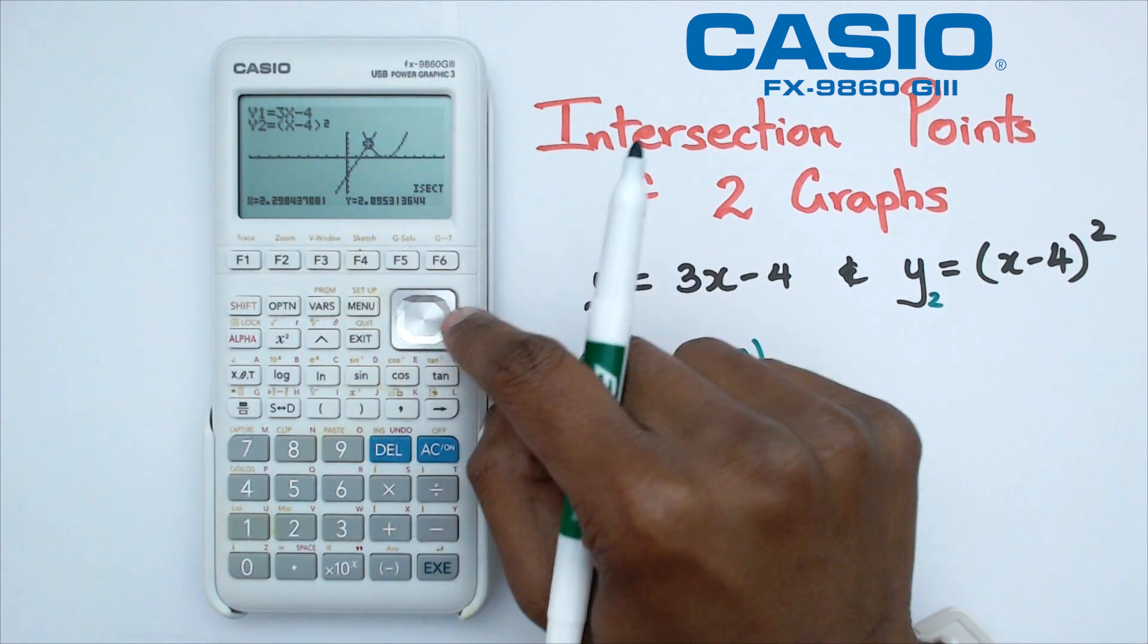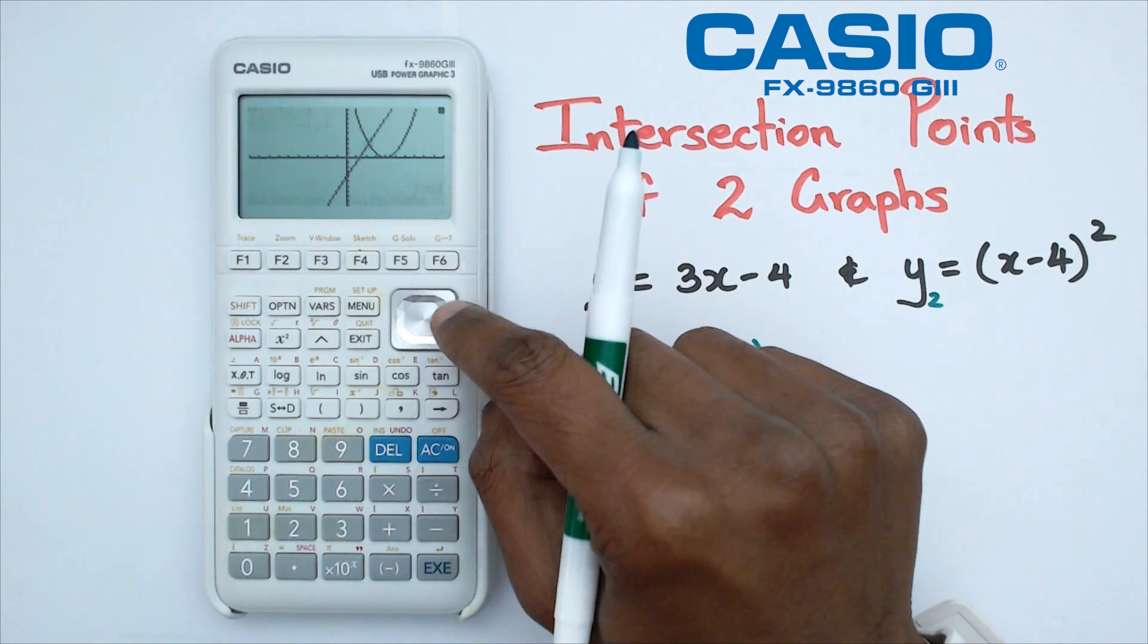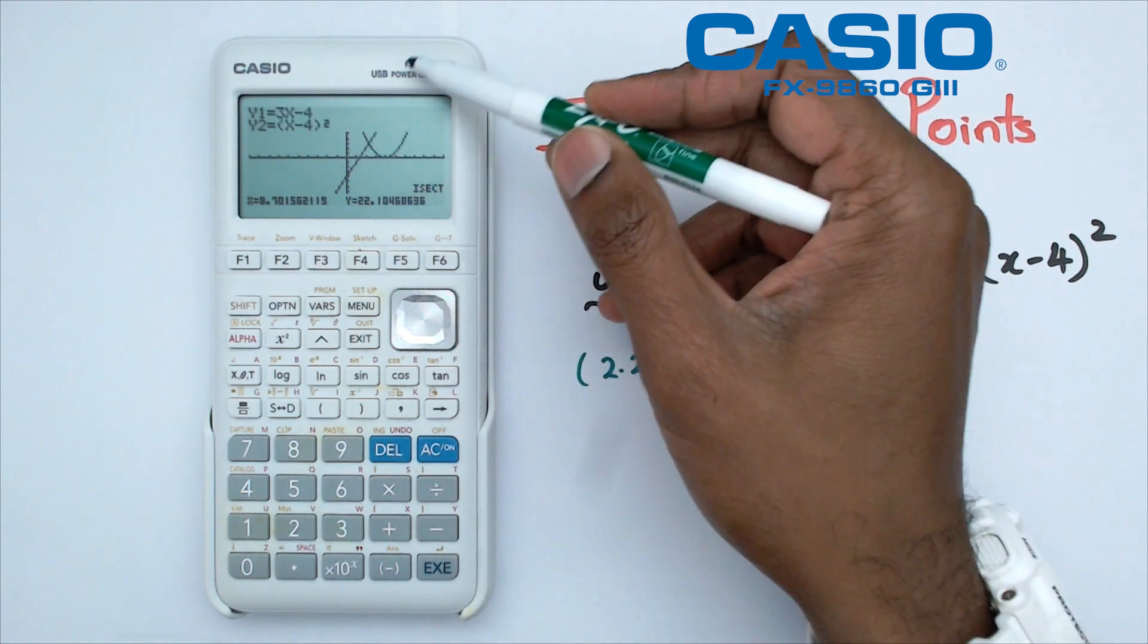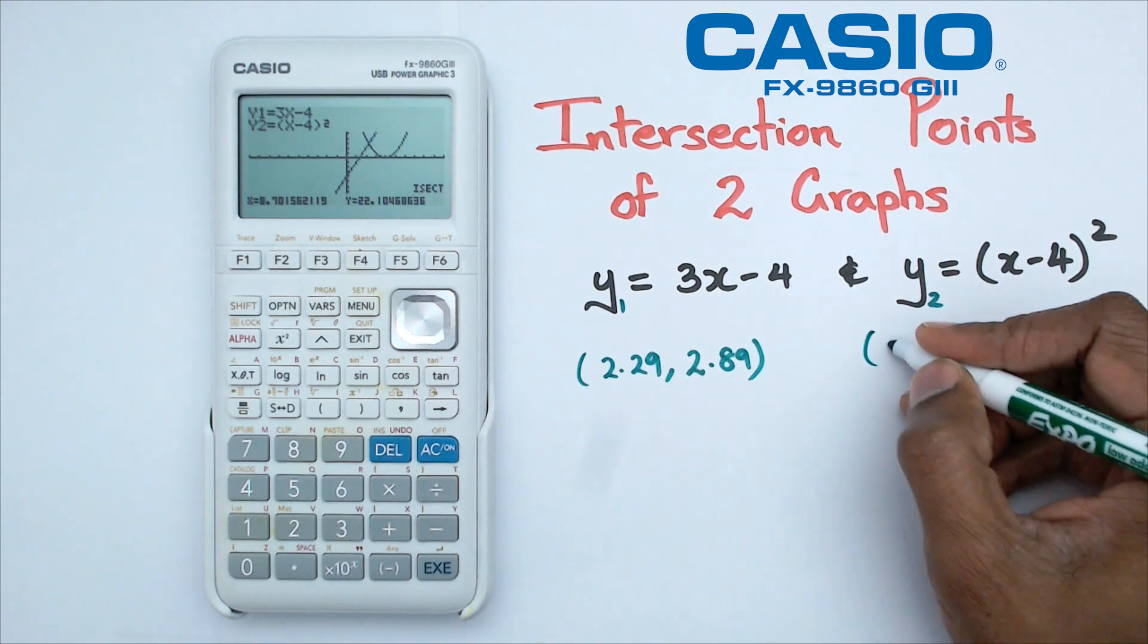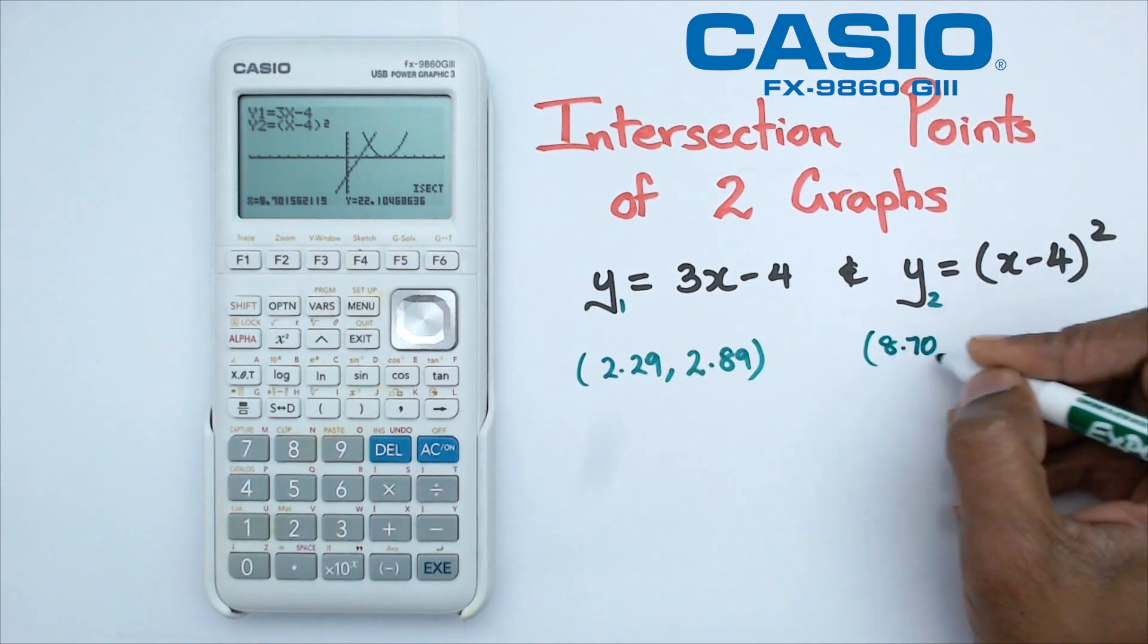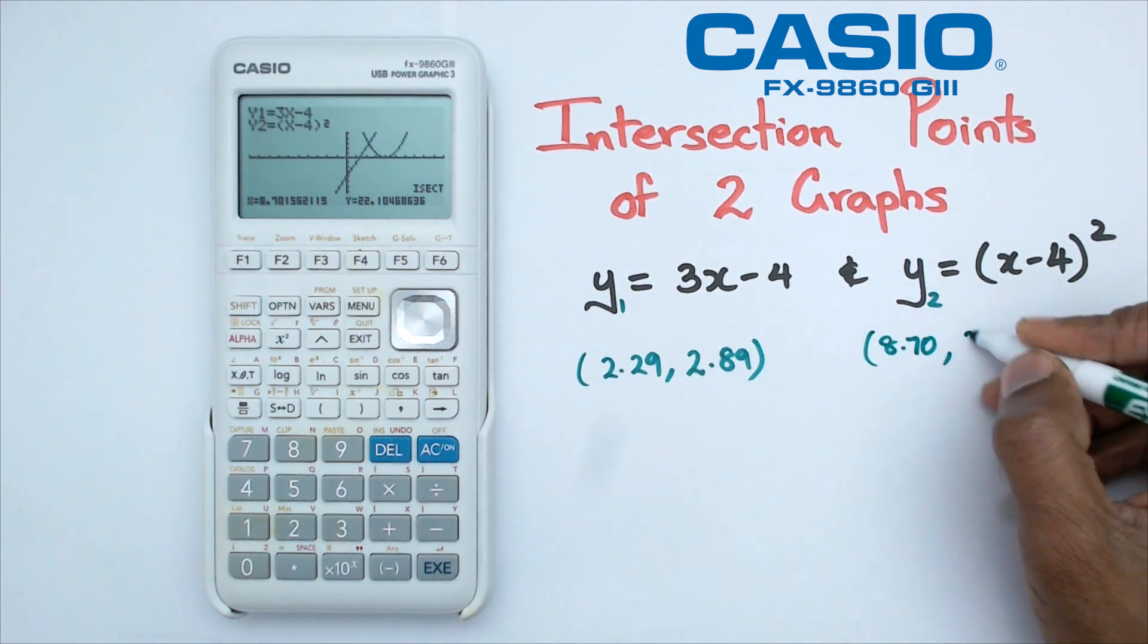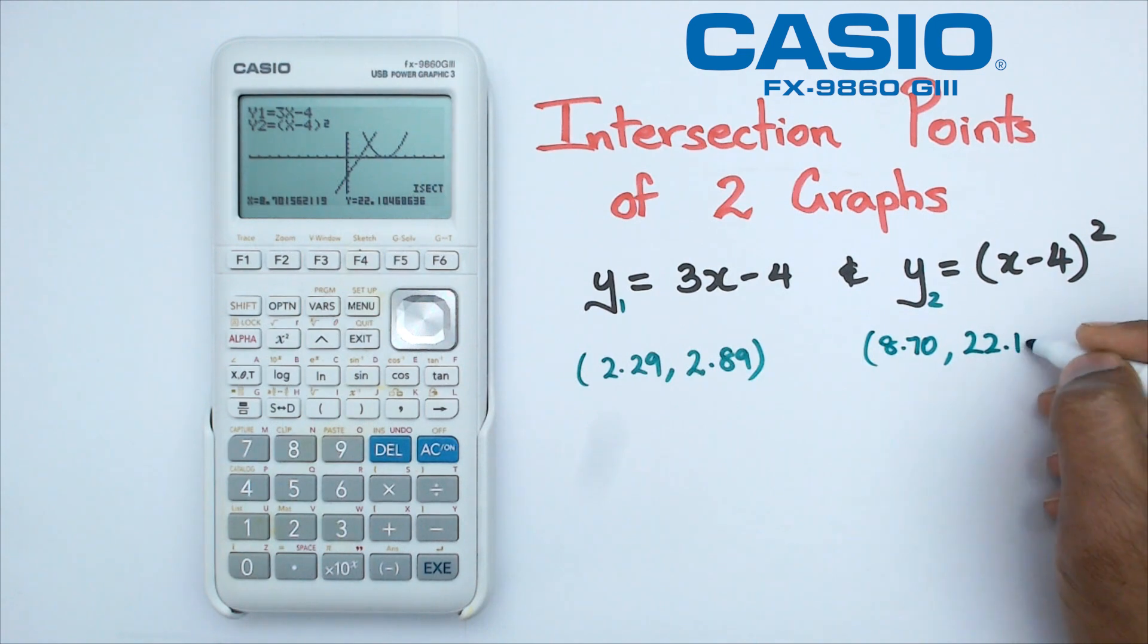Now, if I press the cursor to the right, it's actually going to give me the second point, which happens to be somewhere around here, which is 8.70, and the y-value is going to be 22.10.